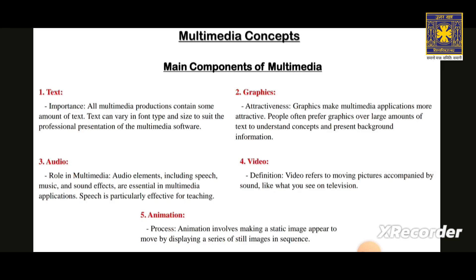Graphics make Multimedia applications more attractive. People often prefer graphics over large amounts of text to understand concepts and view background information. There are two types of graphics: bitmap images and vector graphics. Bitmap images are real images captured from devices like digital cameras or scanners — they are usually not editable and require a large amount of memory. Vector graphics are drawn on the computer, require less memory, and are editable.